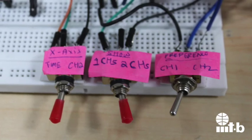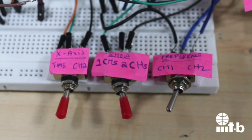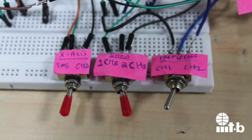It has controls to select if x-axis is time or channel 2. If time axis then if to show two channels or one. If to show only one channel, which one?